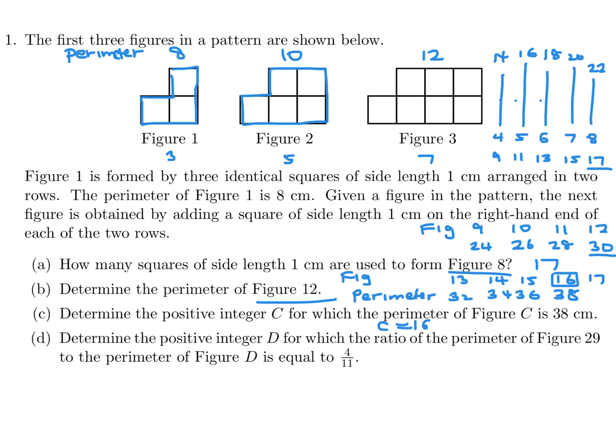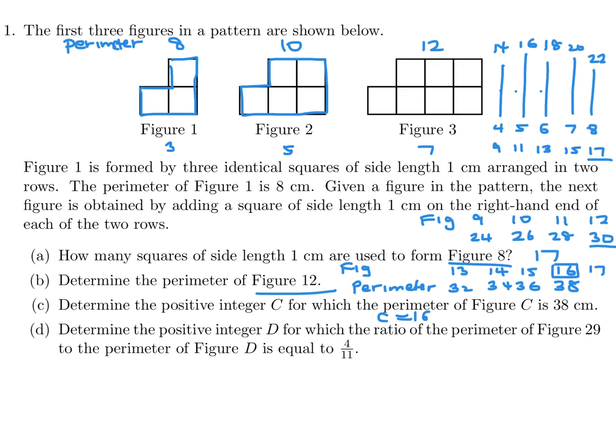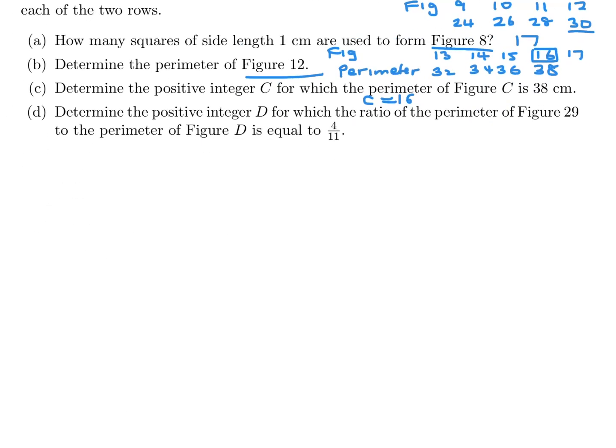And then finally, determine the positive integer D for which the ratio of the perimeter of Figure 29 to the perimeter of Figure D is 4 to 11. All right. So the ratio of the perimeter of Figure 29, well we can easily figure that out. 17, 18, dot dot dot, all the way to 29. And I'll let you do that. I mean, I'm sure you can. And when you do that extrapolation, you will find that this is 64, the perimeter.